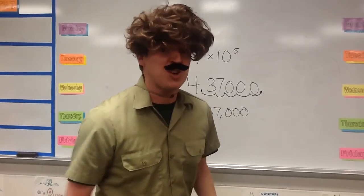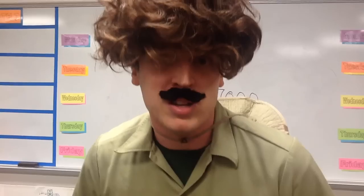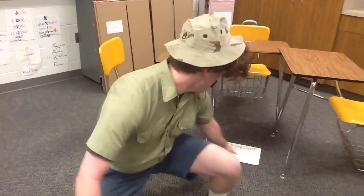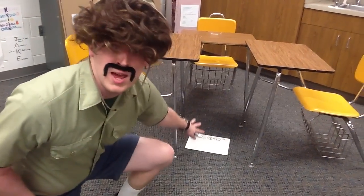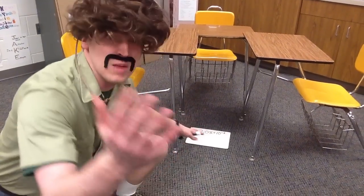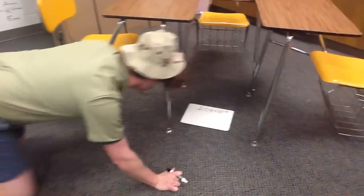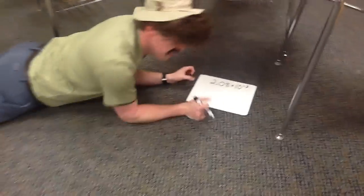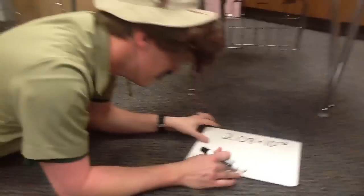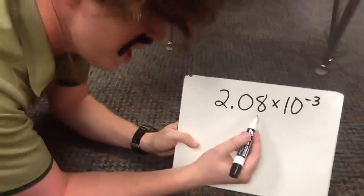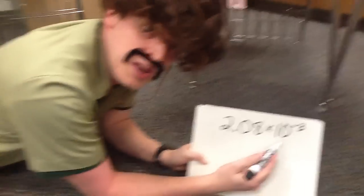Let's go on for our search and look for more numbers in the natural habitat. Let's go to the school and go find those numbers. Come hither. Look! A number in its natural habitat — the math classroom. Let's get a little bit closer and solve this one together. We have 2 and 8 hundredths times 10 to the negative third power.